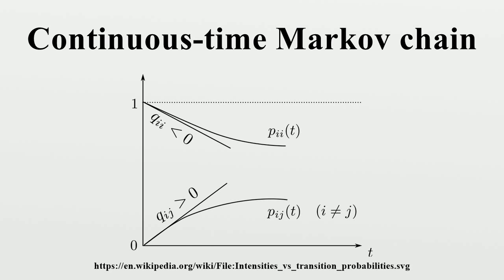Irreducibility. A state j is said to be accessible from a state i if it is possible to get to j from i. A state i is said to communicate with a state j if both i→j and j→i. A set of states C is a communicating class if every pair of states in C communicates with each other and no state in C communicates with any state not in C. Since communication is an equivalence relation, the state space S can be partitioned into communicating classes. A CTMC is irreducible if the entire S is a single communicating class.